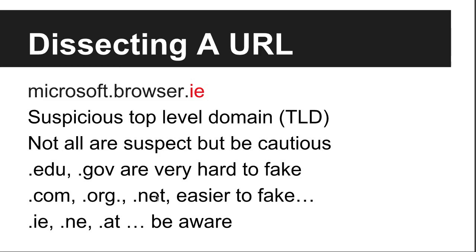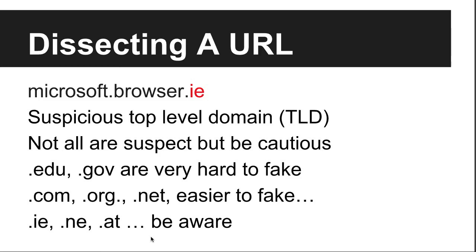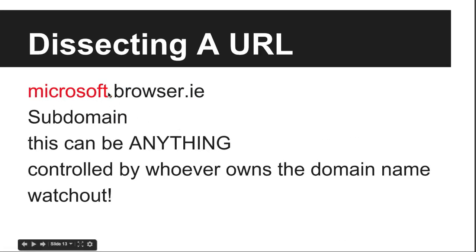When you get into things like .ie, .any, or .at, you should be more careful — not because of where they come from, but because these are newer TLDs that haven't been available for very long. Most .com domains are taken, but not every .ie or .at has been registered. So you might see something that looks legitimate but isn't, because someone was able to register it. As for subdomains — the part before the domain name — they can literally be anything, controlled by whoever owns the domain.